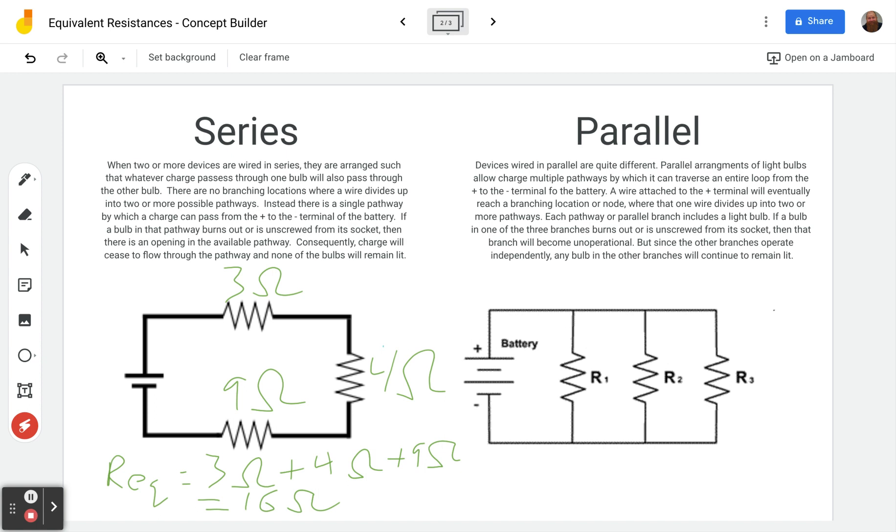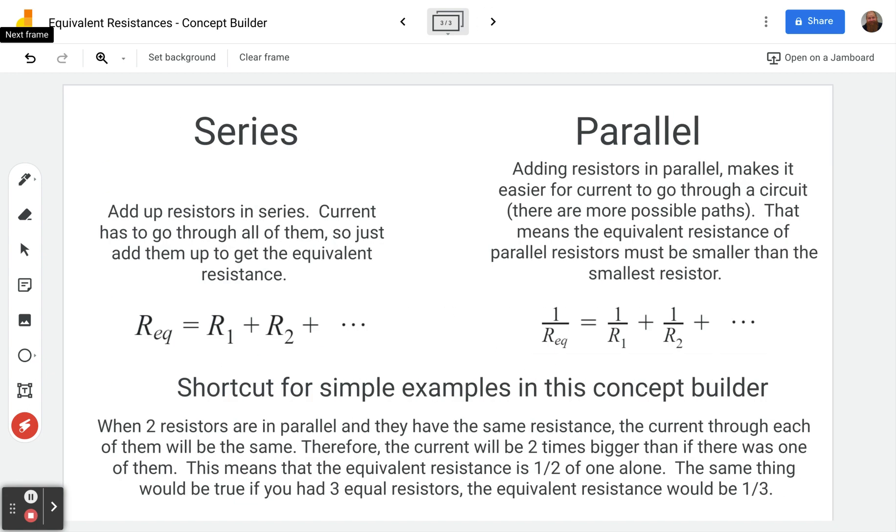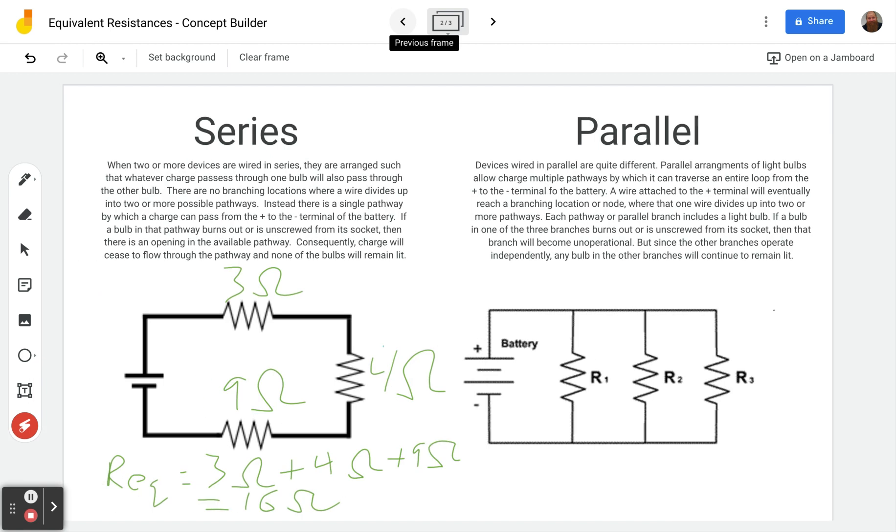Parallel is a different beast though. It is not as simple but it is not super hard and this concept builder focuses on some simple examples. So parallel, when we're adding resistors in parallel, what's that gonna do? Well remember that makes it easier for the current to go through the circuit because there are more possible paths. That means that the equivalent resistance of parallel resistors must be smaller than the smallest resistor. Let's take a look at what that means.